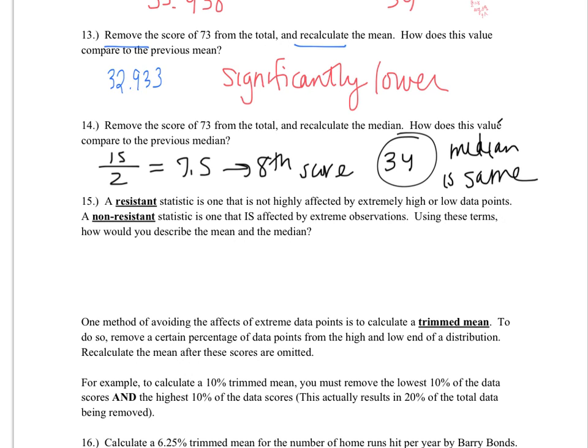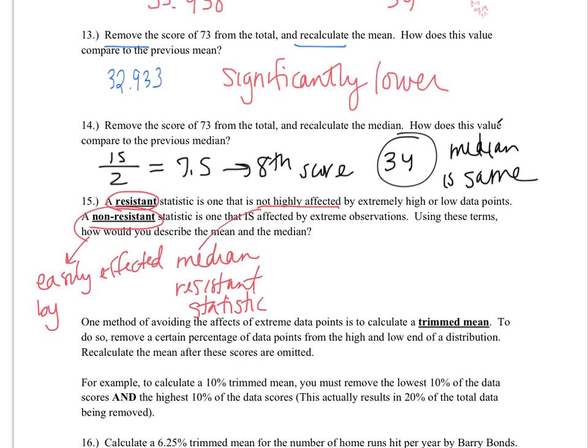Now in part 15, we talk about the difference between being resistant and non-resistant. Basically, if we look at our different scores, a resistant statistic is one that is not highly affected. And in this case, our median is a resistant statistic. It isn't affected by those highs and lows. You could have one really low score, one really high score, but the middle is still about the same. The mean is what we call a non-resistant statistic. It is easily affected by extreme high or low data values.